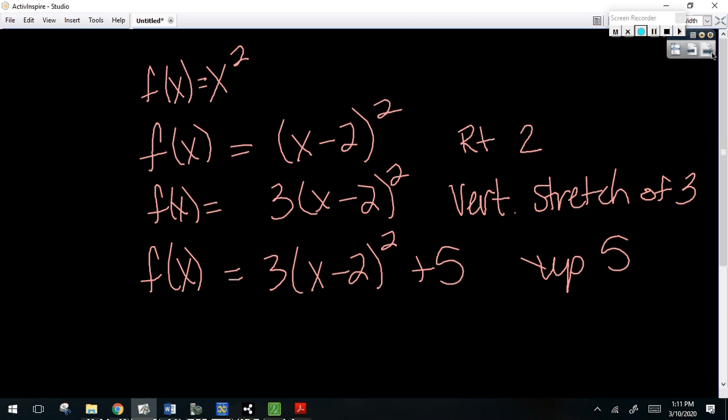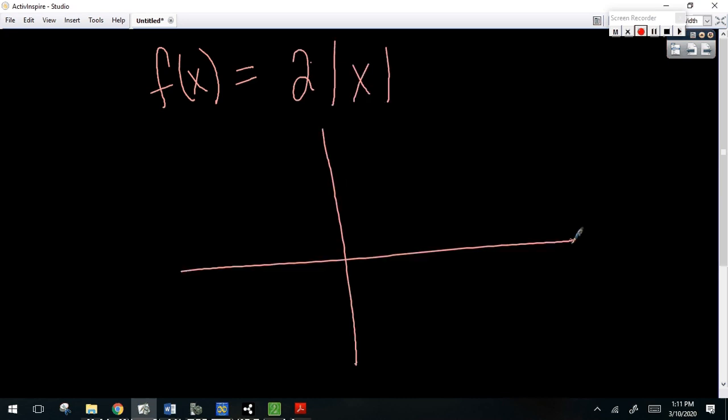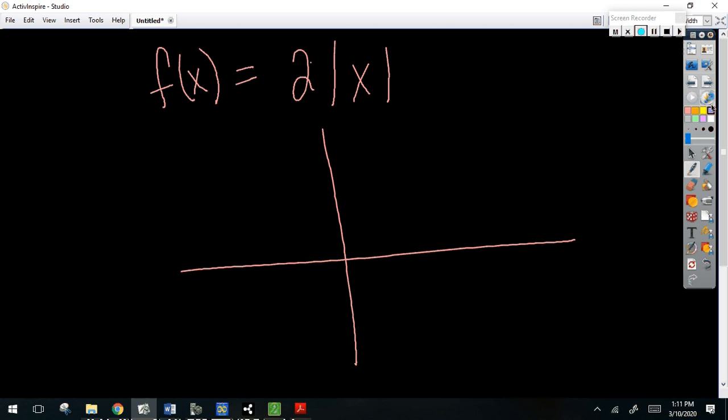All right. Let's graph a couple. Let's do an absolute value. Here's what I want to do. I want to graph the parent and then I want to graph the transformation from the parent using what I know. So the first thing, the parent is that absolute value, that V. 0, 0, 1, 1, negative 1, 1.